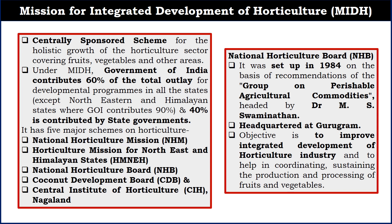Let's see the Mission for Integrated Development of Horticulture. It is a centrally sponsored scheme for the development and growth of the horticulture sector. The central government provides 60% of the total outlay and 40% comes from the state government. For north eastern and Himalayan states, the central government provides 90% of the total outlay and the rest comes from the state government. This scheme has five major sub-schemes: National Horticulture Mission, Horticulture Mission for North East and Himalayan States, National Horticulture Board, Coconut Development Board, and Central Institute of Horticulture, Nagaland.